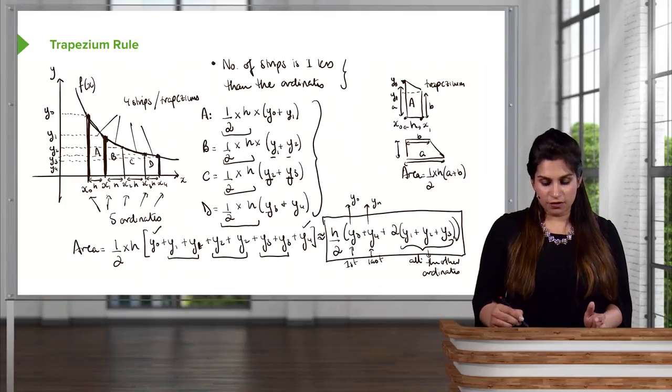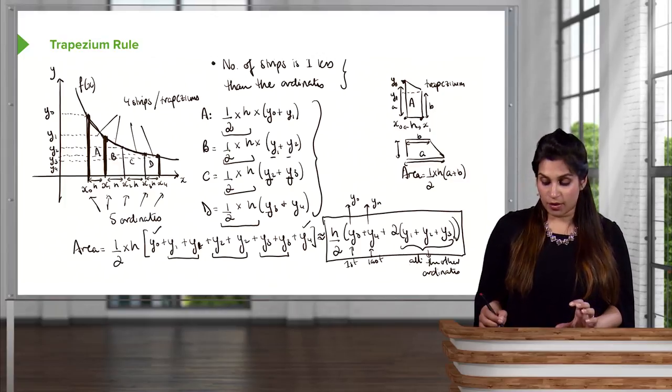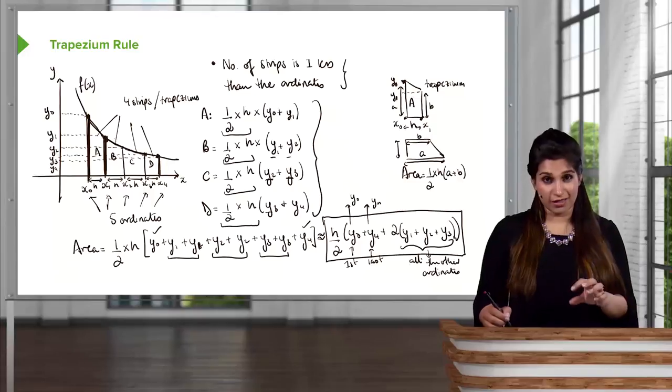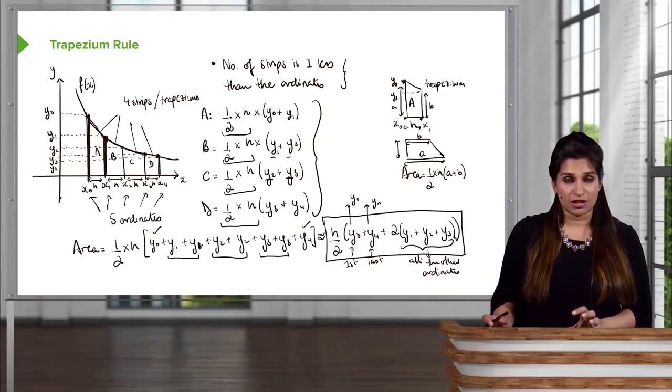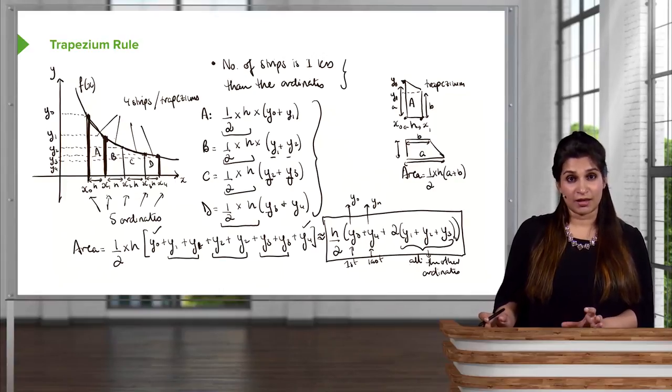You don't have to derive this formula. This is just for us to see where it comes from. But if you know the formula, all you then have to do is substitute your y ordinates into the formula, and you need to work out what h is. We'll do a numerical example now to explain how we actually apply this formula.